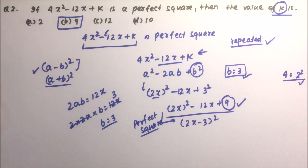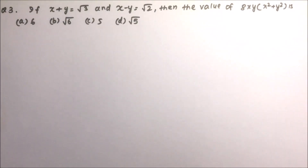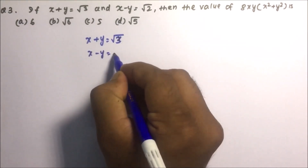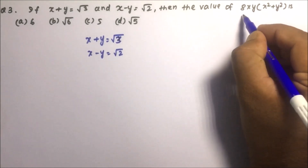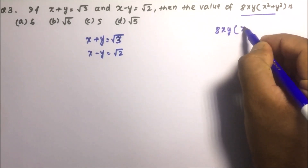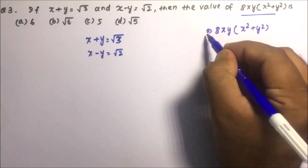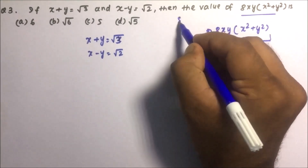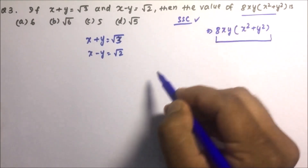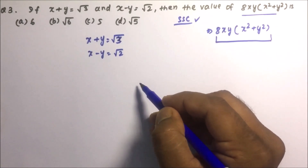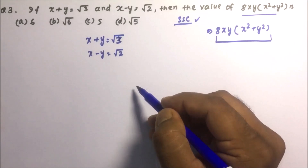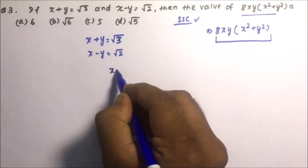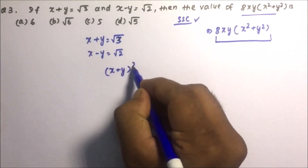Moving towards question number 3: if x + y = √3 and x - y = √2, then find the value of 8xy(x² + y²). We need to calculate this value using algebraic identities. All these problems have already been asked in the SSC examination, and you should have practiced them before going for the exam.